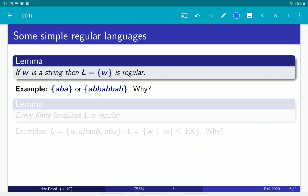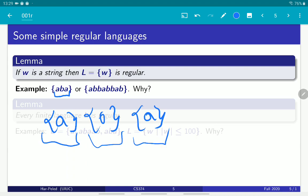The reason, of course, is that—think about the string aba. You can generate, by definition, the regular language which is just the string a, just the string b, and just the string a, and then you can take the concatenation.